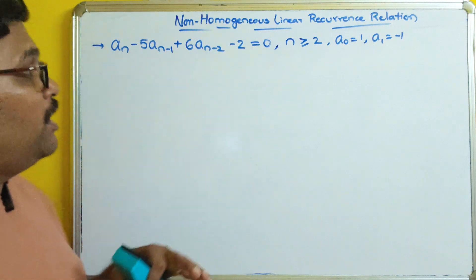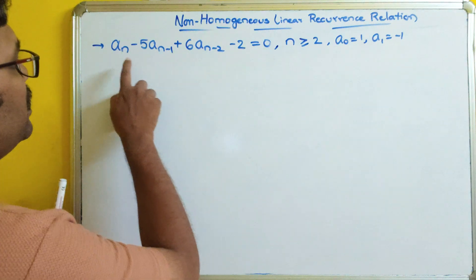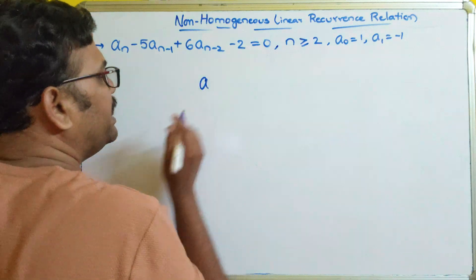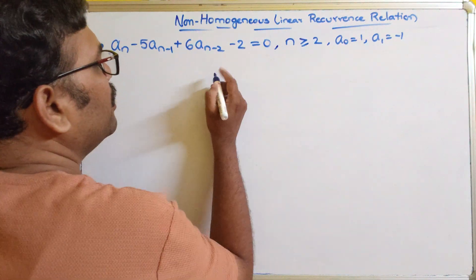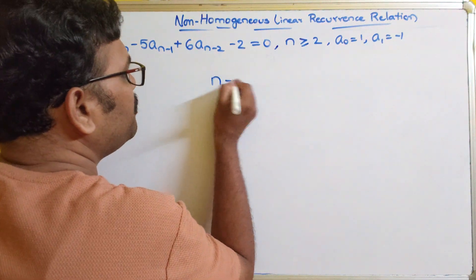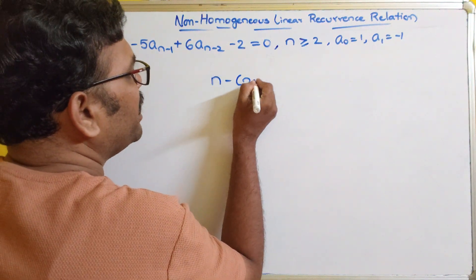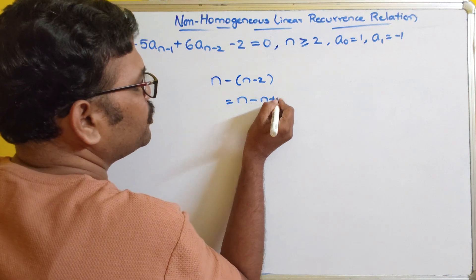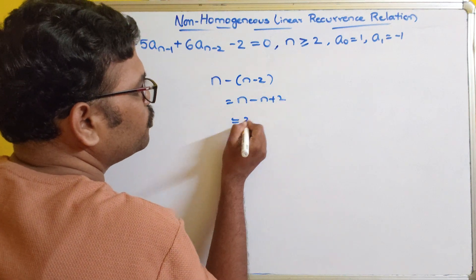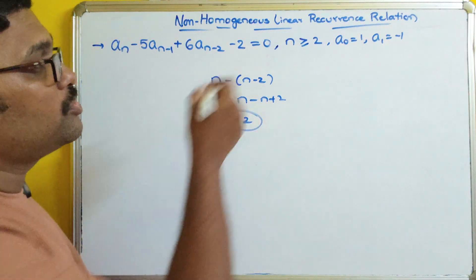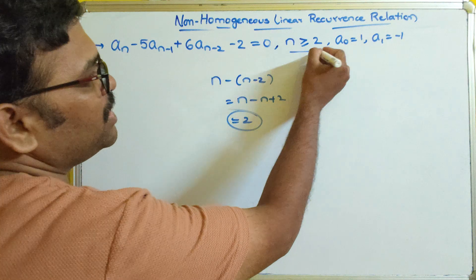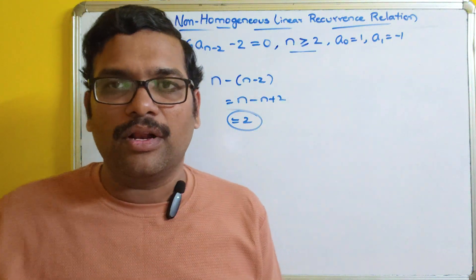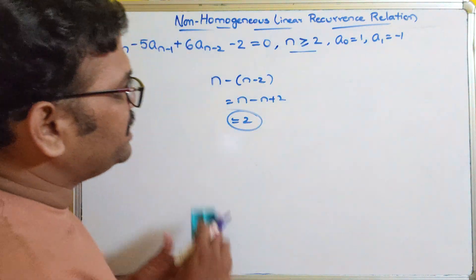So what is the order of this one? The highest subscript is n and the lowest subscript is n minus 2, which gives n minus (n minus 2) = 2. So this is a second order recurrence relation, meaning n should be greater than or equal to 2.